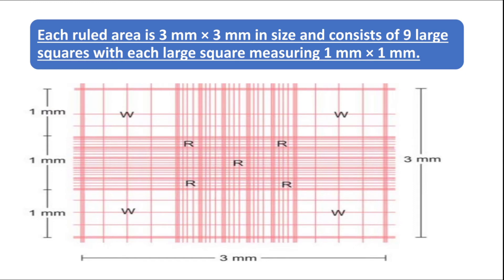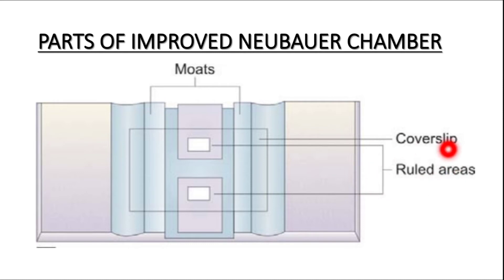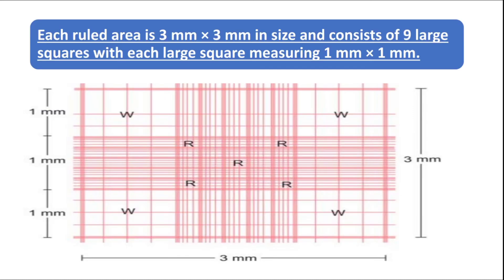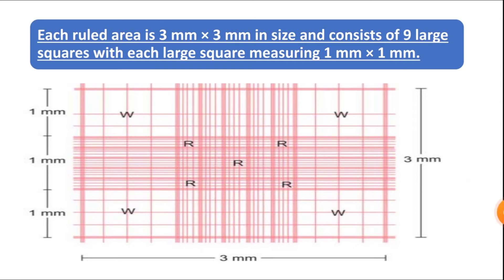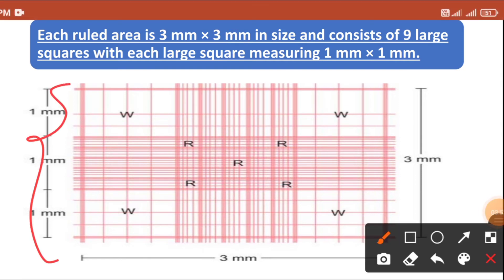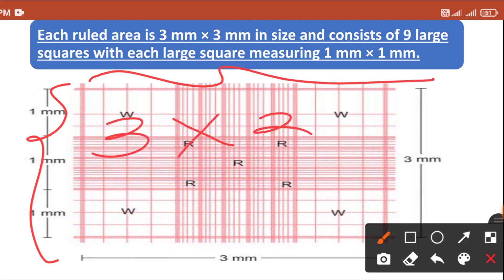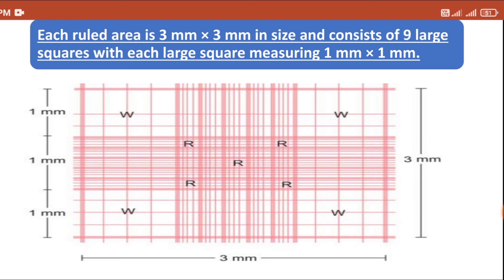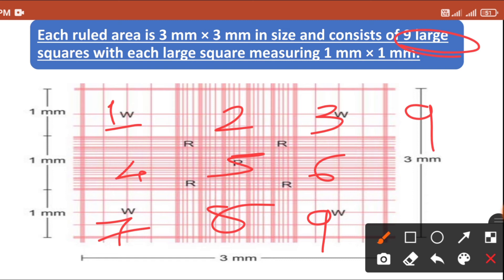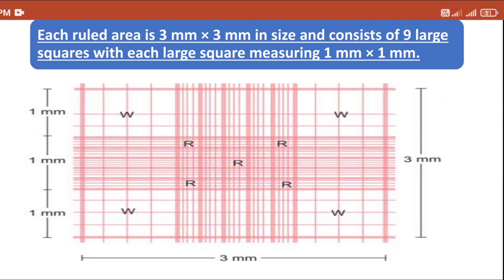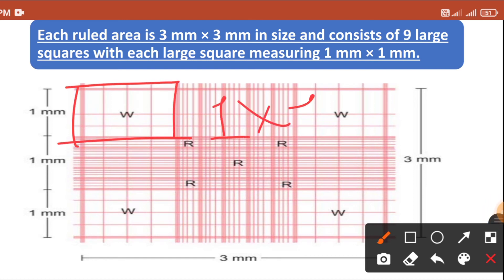If you observe this ruled area under high power view, each ruled area measures 3 by 3 millimeters. Within this ruled area, you will have nine large squares — one through nine. Each large square measures 1 by 1 millimeter.